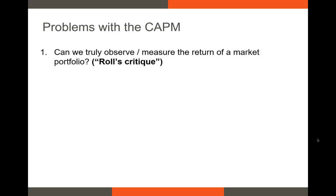There are a lot of big problems with the CAPM that have been known since it was created. Probably the most famous one is Roll's Critique. Roll's Critique says our best proxy for the market is the S&P 500 index, but that only includes stocks — it doesn't include coins, bonds, or other assets. Because we cannot perfectly estimate the return on the market portfolio, we can't ever know whether or not the CAPM works. Roll's Critique is the ultimate catch-22 in investments.